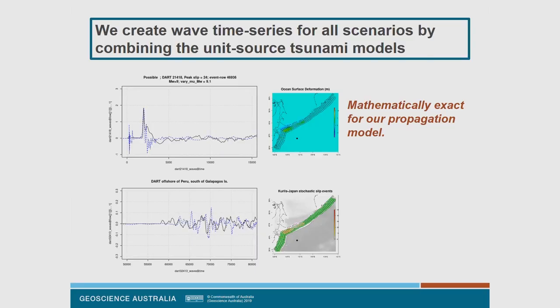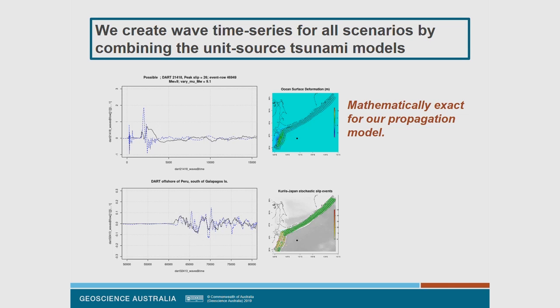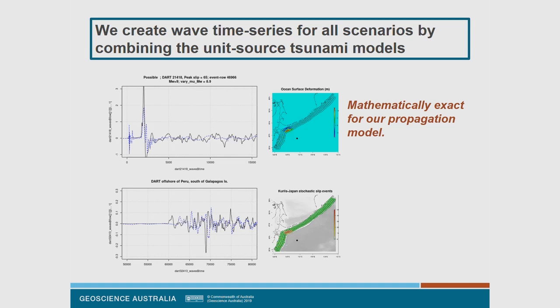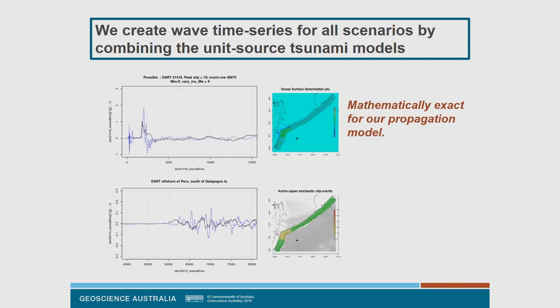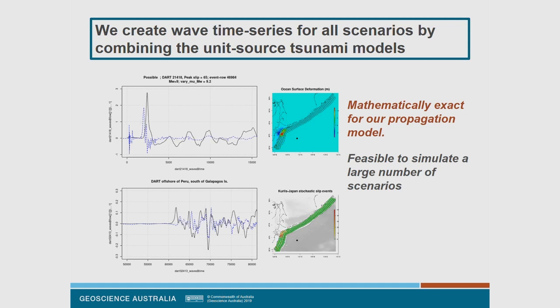Importantly, we only model one tsunami per unit source — those elementary pieces of fault I showed earlier — and make up all our tsunamis from those. Results are stored at hazard points chosen largely to support inundation models for Australia including offshore territories and Antarctica. We also store some global points to help with testing. We create wave time series for all scenarios by combining unit source tsunami models. There's a nice mathematical property of the linear shallow water equations meaning this is mathematically exact — so even with more than a million tsunami scenarios, we only need 4,000-odd propagation models.